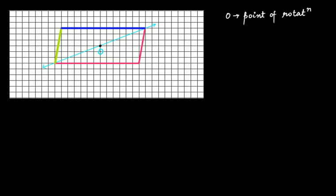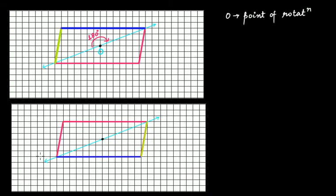So if we rotate around this point by 180 degrees, this is what you will see. Can you see that the side highlighted with the blue color has come here — this side has moved here after the rotation of 180 degrees. Now tell me: are these two images exactly the same or not? Don't focus on the colors — the colors are only to help you understand the rotation. Are these two figures exactly the same?